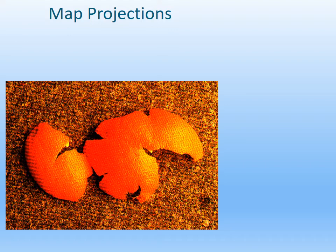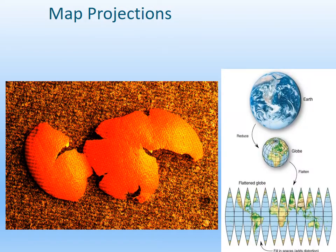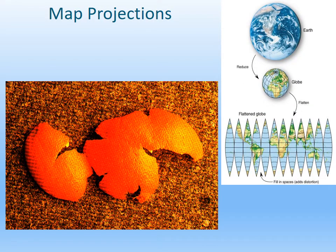Essentially, when we are trying to talk about map projections, think about this orange peel. Up here in the upper right-hand portion, we have the Earth — and a globe is essentially a much smaller version of the Earth. If you started to take pieces of that globe and peel it off, you would get an image that looks like this at the bottom of the right-hand figure. As you can tell, it looks strange — you don't really see maps that look like that.